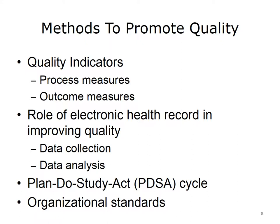Quality indicators may describe processes — for example, the percent of patients prescribed aspirin at hospital discharge after myocardial infarction — or outcomes — for example, in-hospital mortality rate for patients admitted for myocardial infarction. The electronic health record is important in improving quality, not just acting as a vehicle for data collection, but also providing the data required for analysis in a sophisticated fashion.